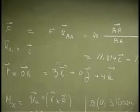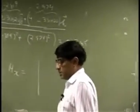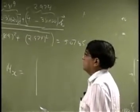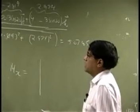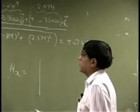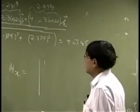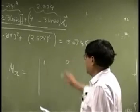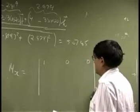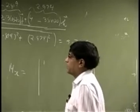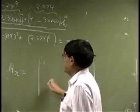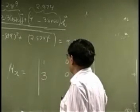So that is the position vector, which means the moment bar X is going to be a determinant. And first row of that should be coming from UA, which was I. So that is 1. Then you have 0 for the J and 0 for the K. Then the second row comes from the R. So that is 3, 0, 4.